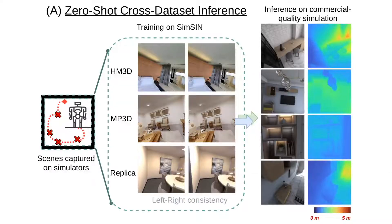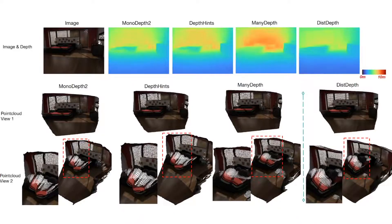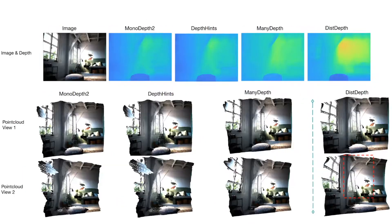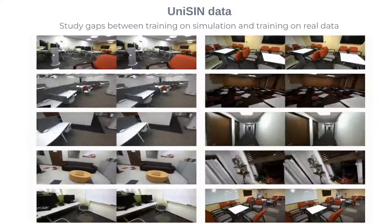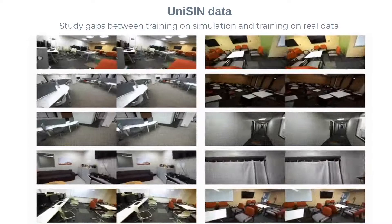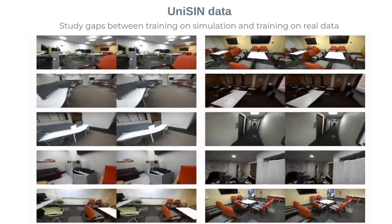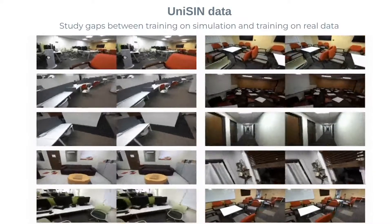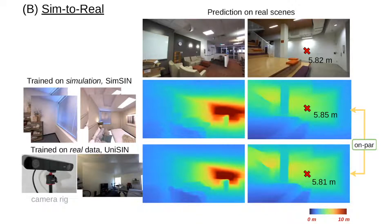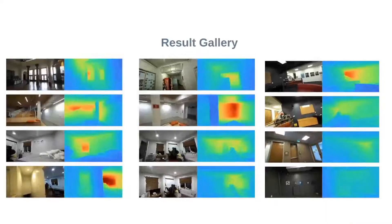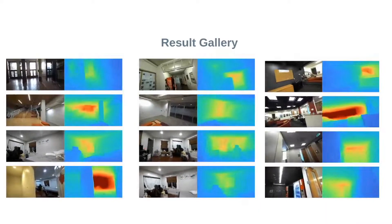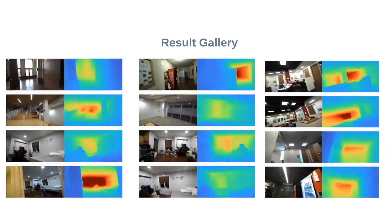Our method is able to perform zero-shot cross-dataset inference. Here are depth map and point cloud comparisons. To further study gaps between training on simulation and training on real data, we collect a large-scale real dataset, UniSyn. Our distillation strategy can drive knowledge transfer from simulation to reality. Predictions by our DiS-Depth display well-structured control and range sensing for in-the-wild real-world scenes.